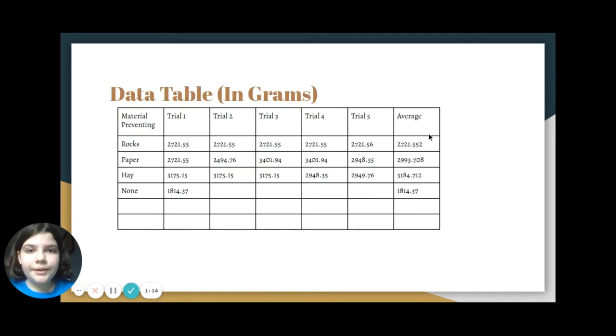This is the data table in grams. The average of rocks was 2,721.552 grams, the average of paper was 2,993.708 grams, the average of hay was 3,184.712 grams, and the average of nothing was 1,814.37 grams.